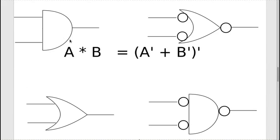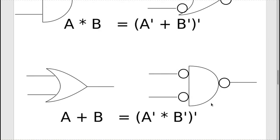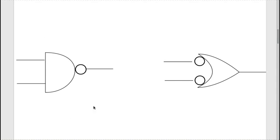When you apply De Morgan's theorem to an AND gate, it changes to an OR gate with all the inputs and outputs inverted, represented by bubbles. And when you do the same to an OR gate, it changes into an AND gate with all the inputs and outputs inverted, represented by bubbles. This applies to NAND gates as well — treating the NAND gate as an AND gate with an inverter on the output, represented as a bubble, changes it into an OR gate with both inputs bubbled.